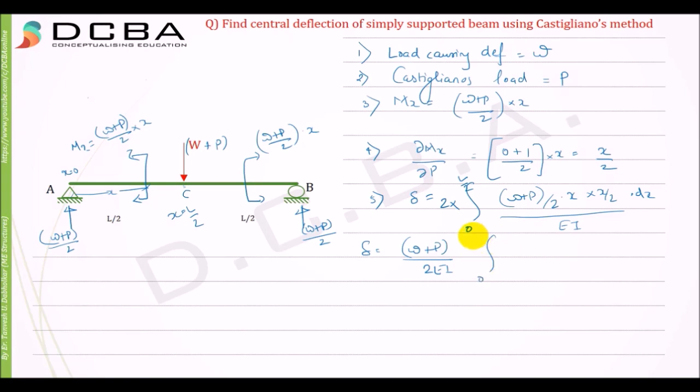So we'll take this outside and simplify. Delta is equal to W plus P divide by 2EI, going from 0 to L by 2, and X square. So X square, this will become W plus P X square by 4, and this 2 and 4 will get cancelled, so 2 will remain in the denominator and EI outside. Now we can cancel this P since it's an imaginary load.